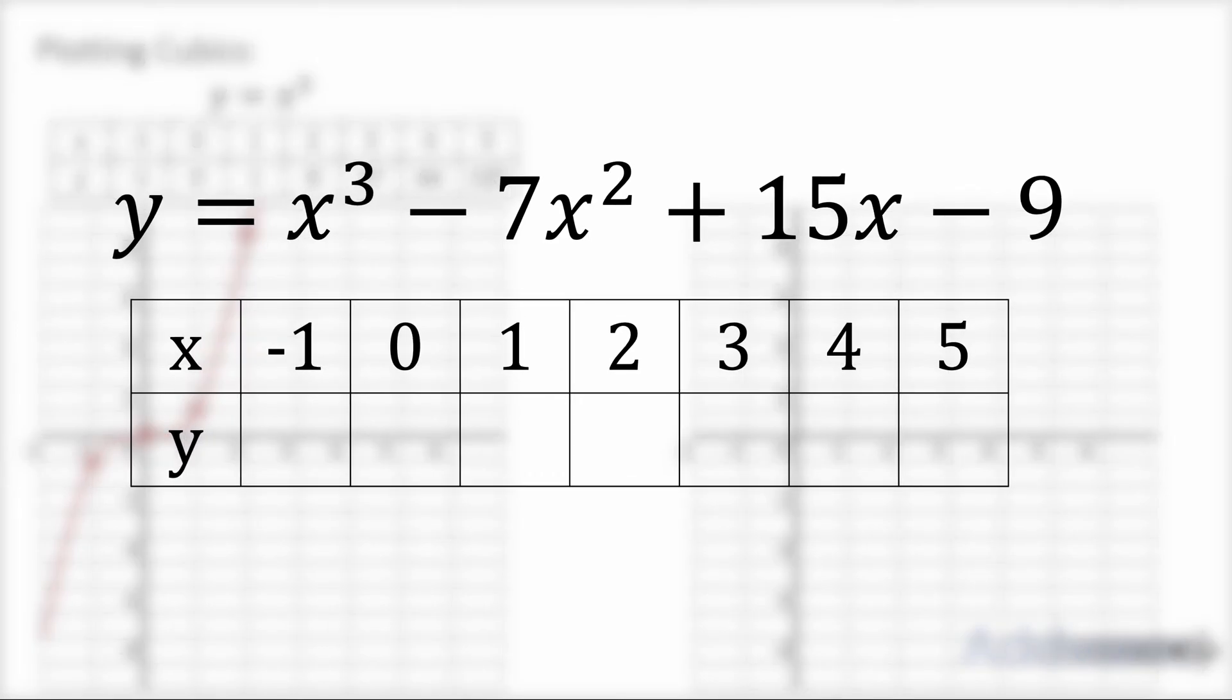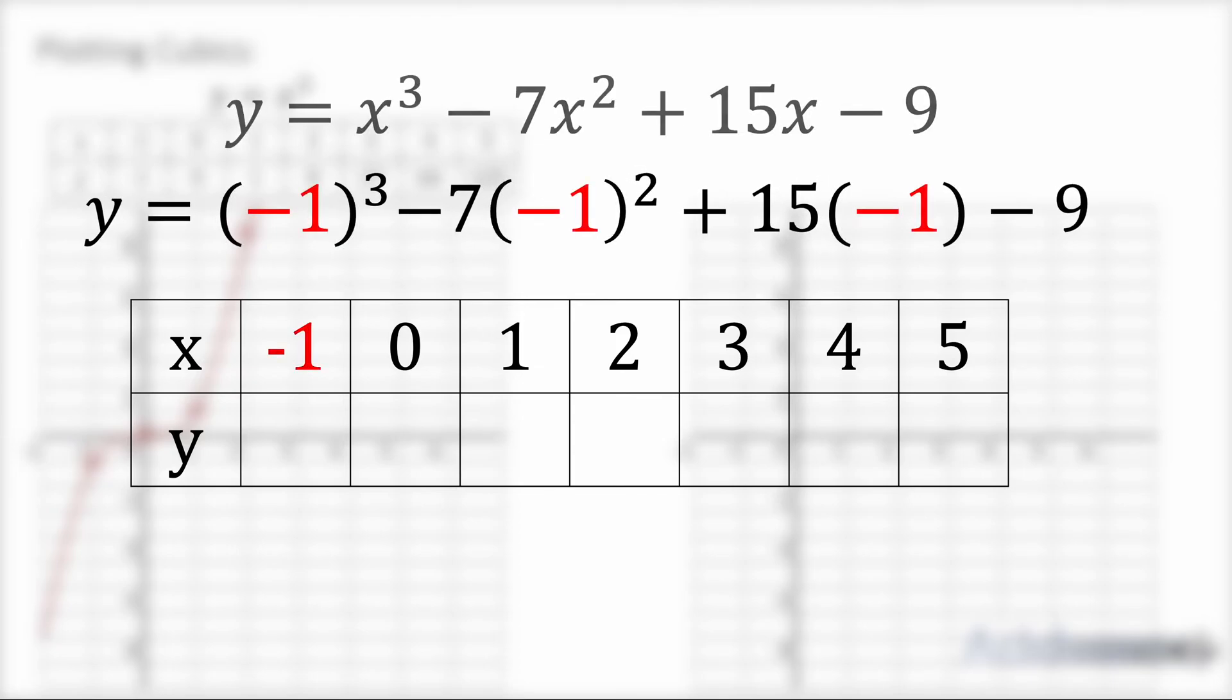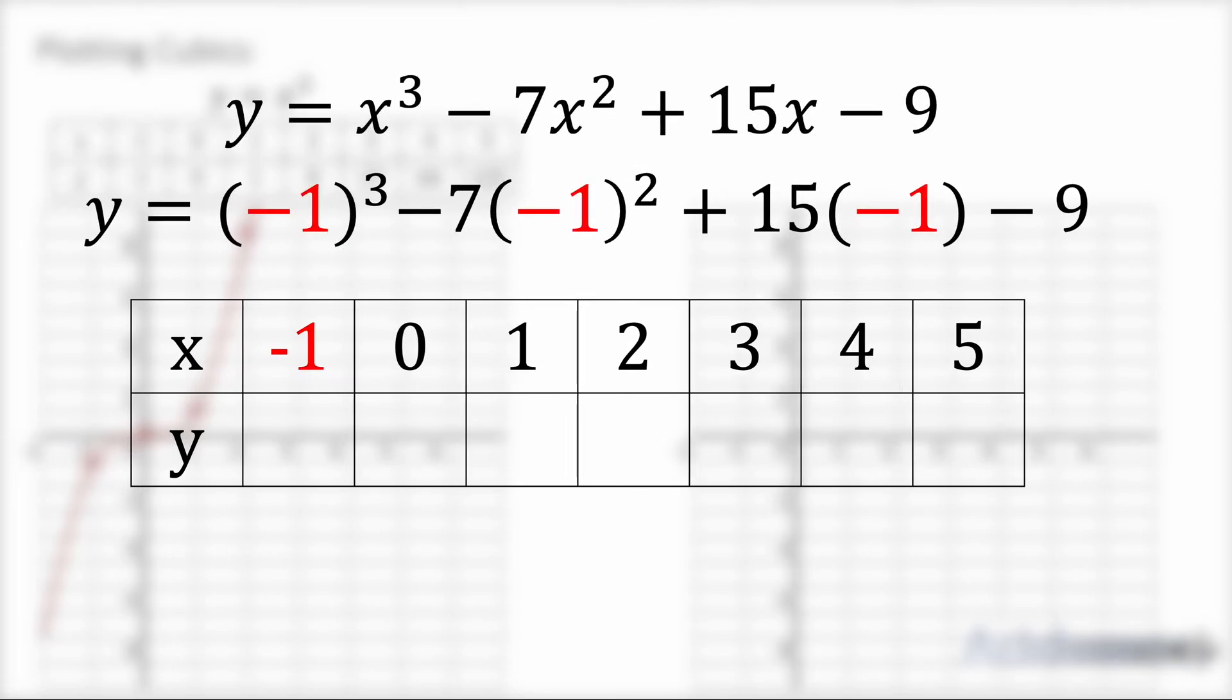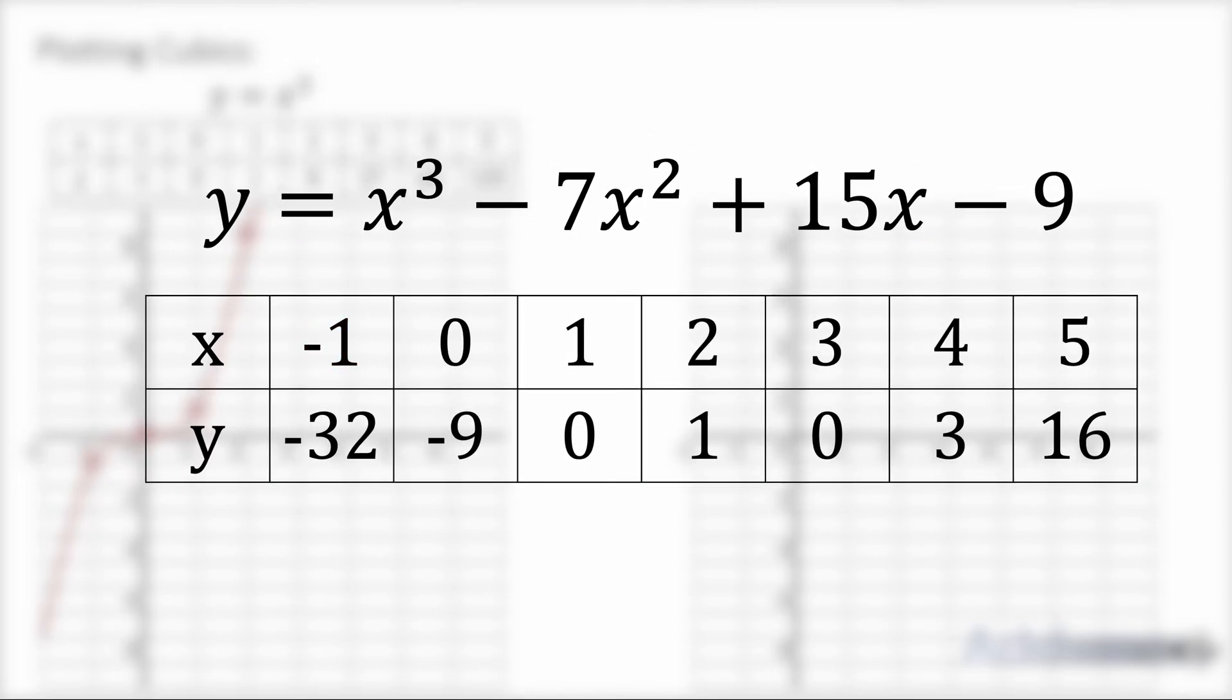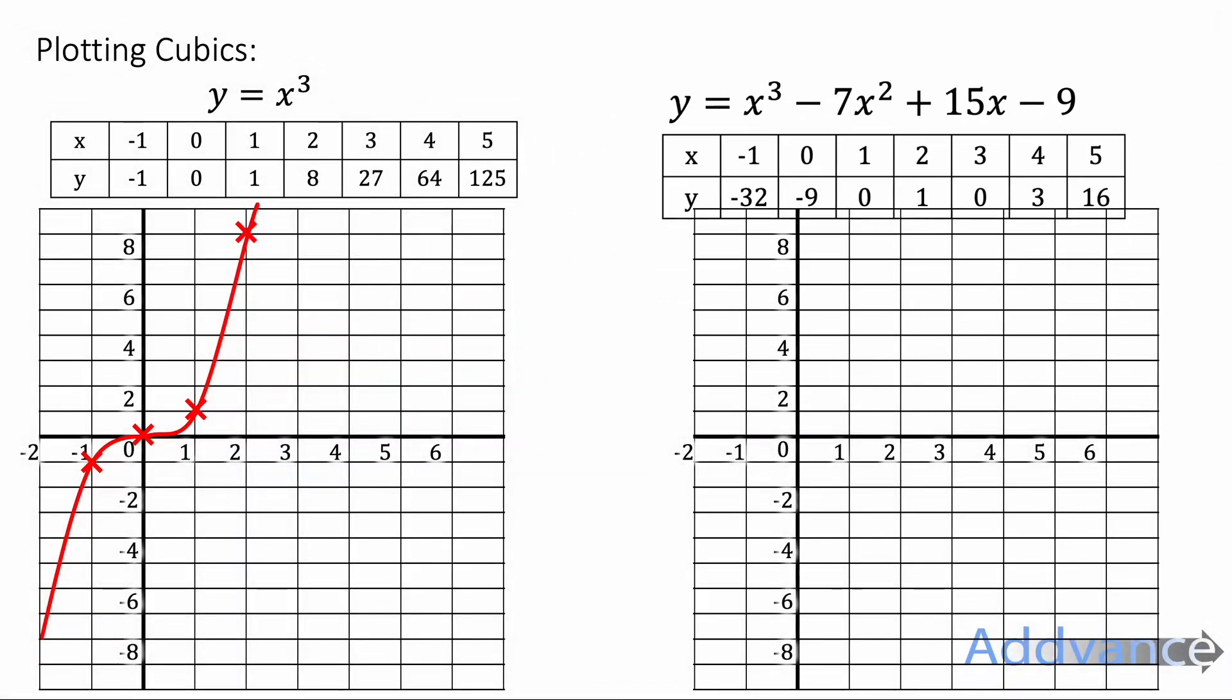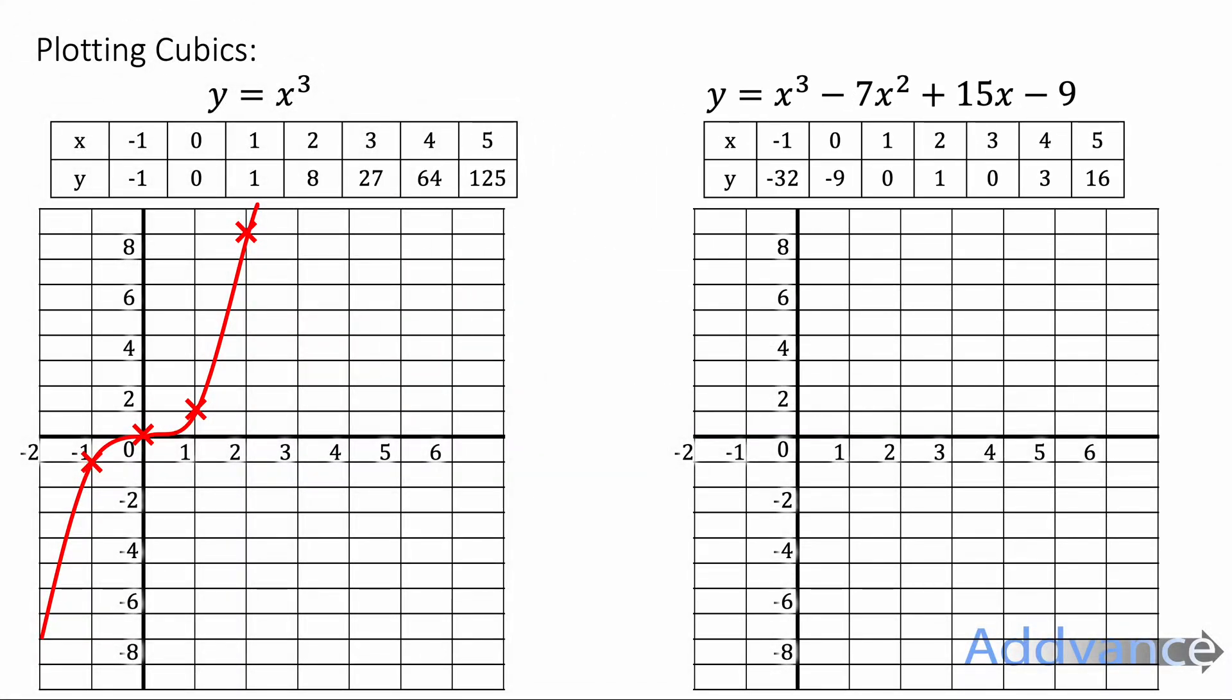Here we've got y = x³ - 7x² + 15x - 9 and again we can just substitute those values, those x values into the expression to find the matching y values. And if you keep going you get these y values here. And then we plot those coordinates on the graph like this.